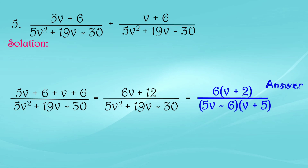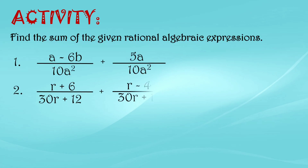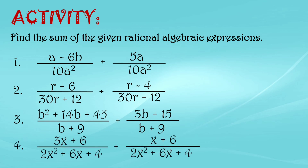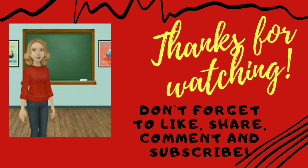I hope you understood our lesson on how to add similar rational algebraic expressions. Try it yourself — find the sum of the given rational algebraic expressions. All you need to do is add the numerators of like terms and copy the denominator. Thank you for watching — don't forget to like, share, comment, and subscribe to my channel. Until next time!